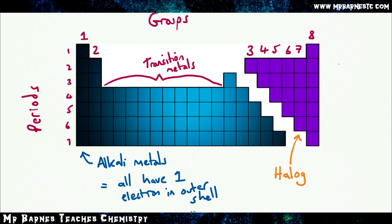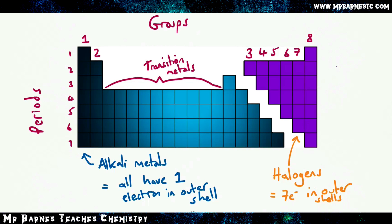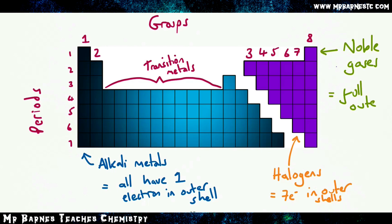The halogens are group seven and they all have seven electrons in the outer shell. The noble gases are in the final group, which on some periodic tables you'll see as group eight, but in general it's classed as group zero. They have full outer shells — so helium has two in the first shell and everything else has a full eight in the outer shell.